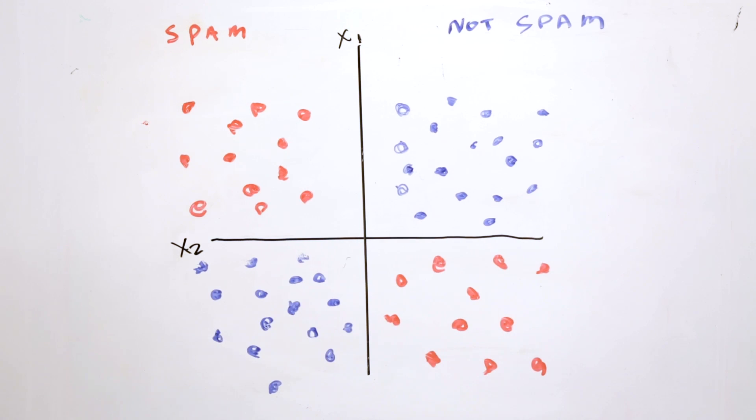At this point, we should recognize this problem as a simple non-linear problem, something that we can solve easily with feature cross-products.